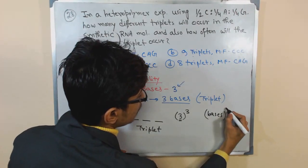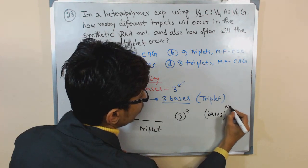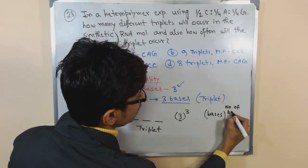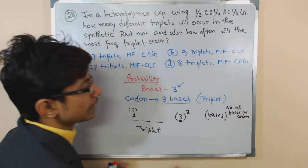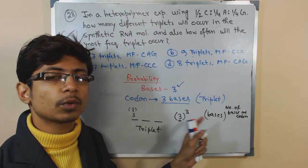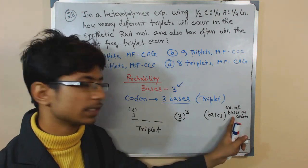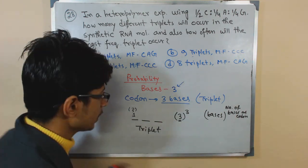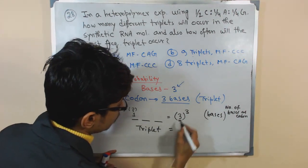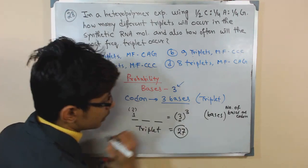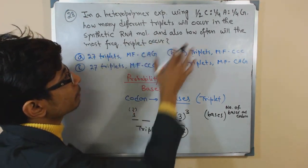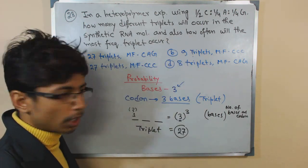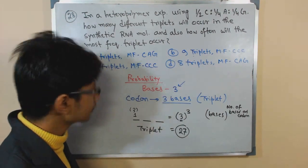Let's say they told us the codon is a tetraplet - in that case we need to place four there instead of three. So 3 to the power 3 is going to give us 27. The total number of triplets that is going to occur is 27. So you can see 27 triplets, 27 triplets, 9 and 8 - you can easily exclude them out.